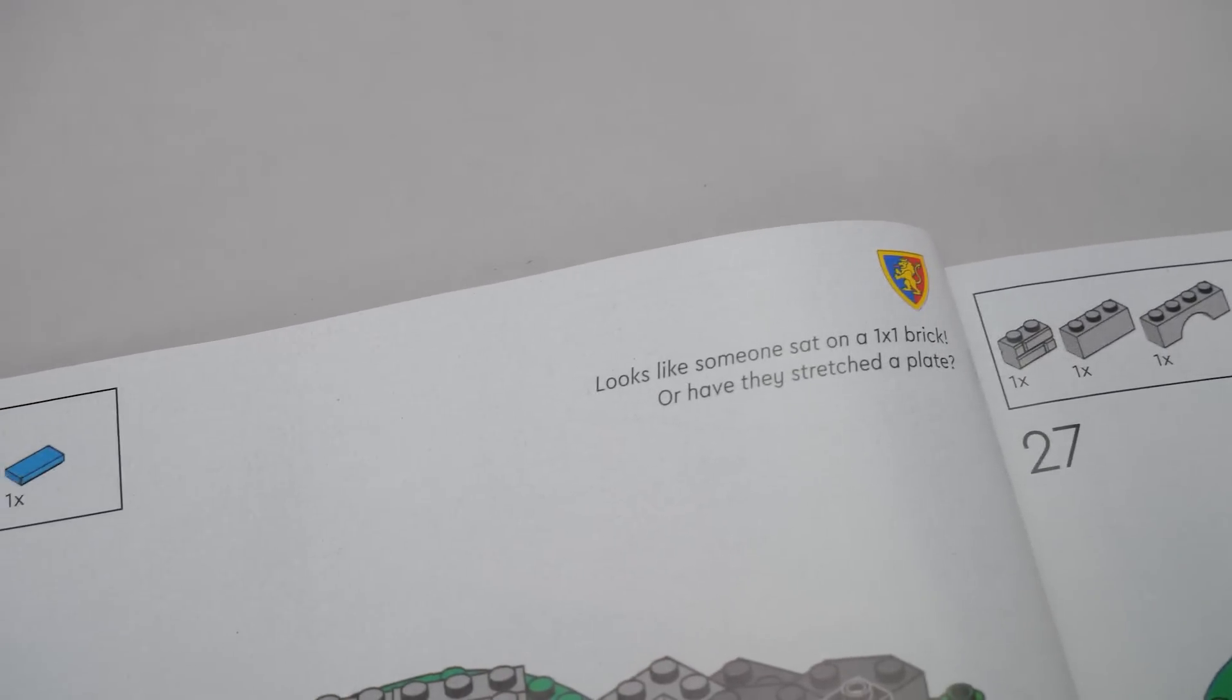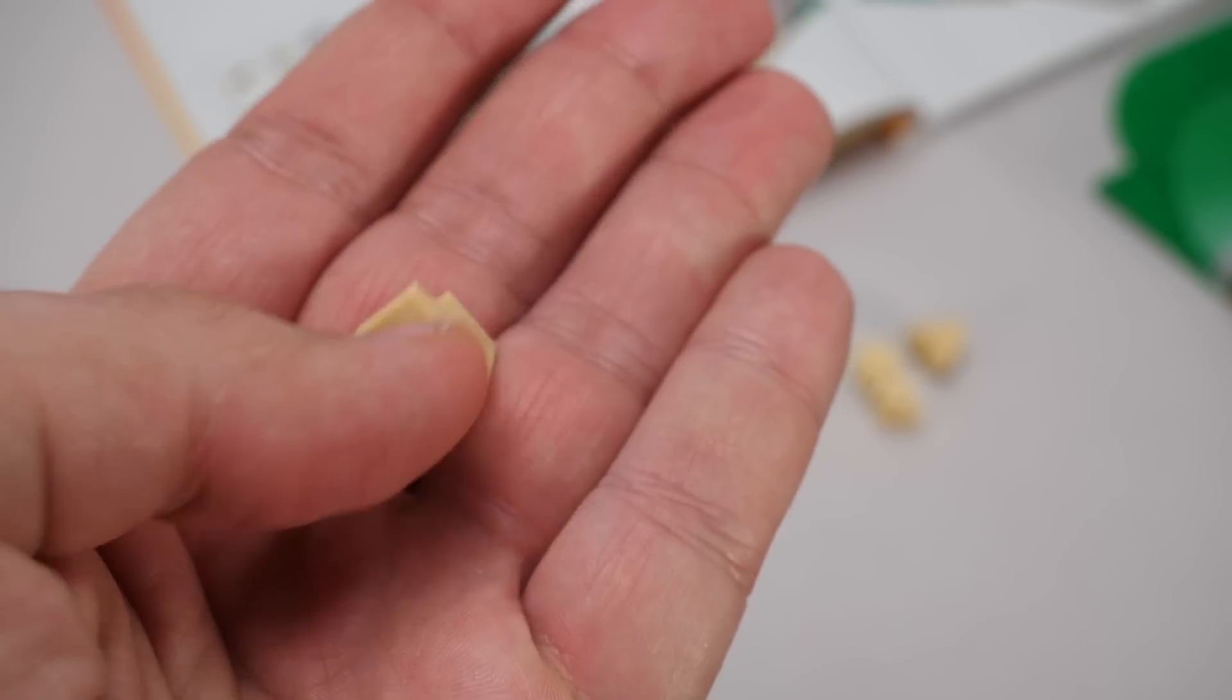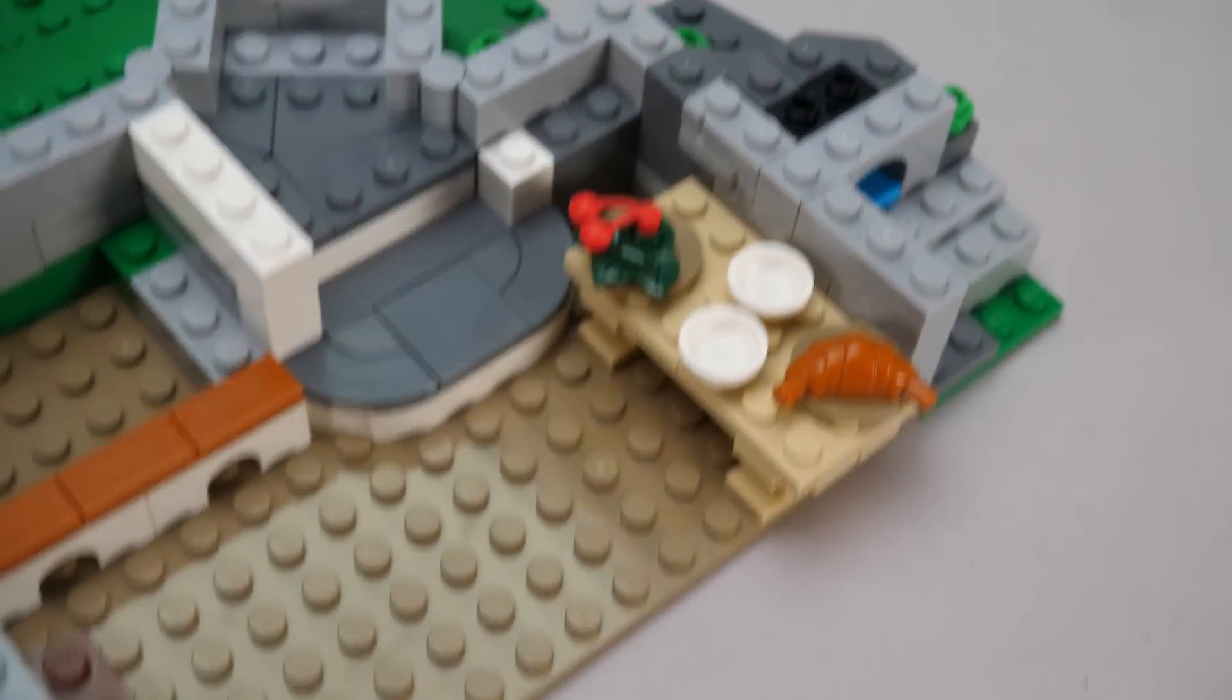This wall construction technique is pretty neat. The triangular plates complement each other and the hinges hold everything in place while the assembly sits on some tiles. Yet another new piece highlighted here, a modified 1x1 brick.